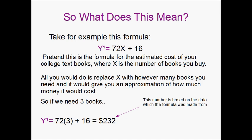Take for example we got Y' here and we say that we needed 3 books for college. All we would do is just replace the X with 3. So, being that 72 times 3 plus 16 equals 232 dollars. So this would be our estimated cost on how much we would predict that we need for college textbooks.